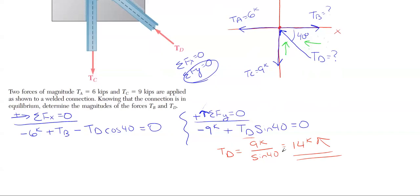With TD known at 14 kips, don't forget I've already done the X equation. Just take that 14 and plug it back in. This X equation then becomes minus 6 kips plus TB minus 14 kips cosine of 40 equals zero. If we rearrange and solve for TB, TB pops out to be 16.72 kips to the right. Those are the two answers we were tasked to find.